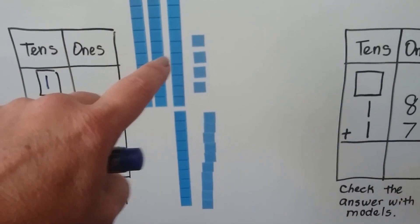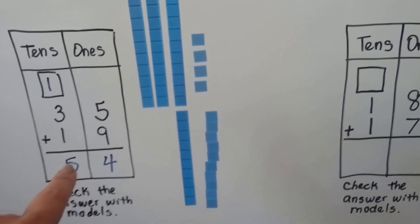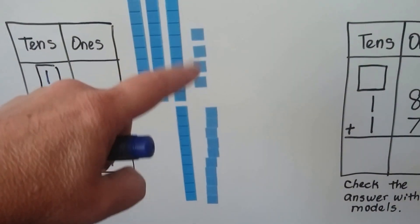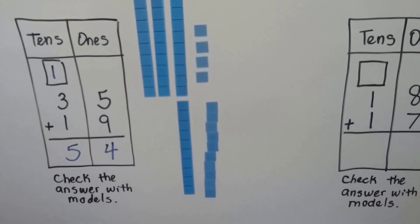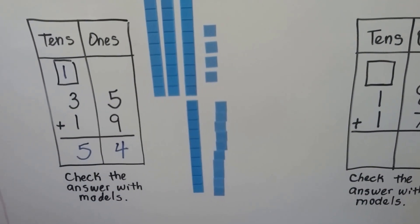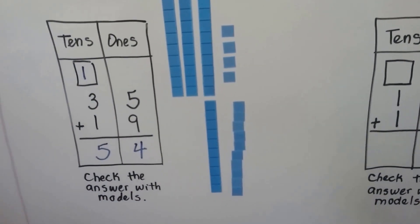So we have 1, 2, 3, 4, 5 tens and 4 ones left. See? It worked. We got the right answer.